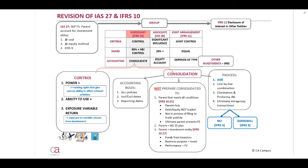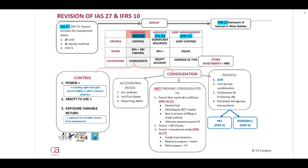Welcome to our first revision of groups for this year. We will look at IAS 27 and IFRS 10. Before we start with the lecture, let's quickly discuss the applicable IFRS standards that cover our group accounts. There is IAS 27 that relates to our separate financial statements; IFRS 10 that describes the definition of control and our consolidated financial statements. Investment in associates will be covered in IAS 28, joint arrangements in IFRS 11, and disclosure of interest in other entities in IFRS 12. Then a very important standard which will be IFRS 3, and we will cover that in the following weeks.